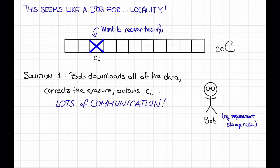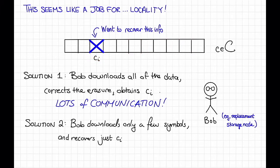The second solution is to try to take advantage of some locality in the code. That is, Bob can download hopefully only a few symbols, make a few queries to this codeword, and hopefully be able to recover c_i.